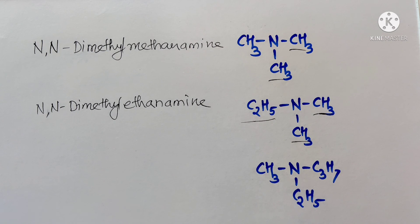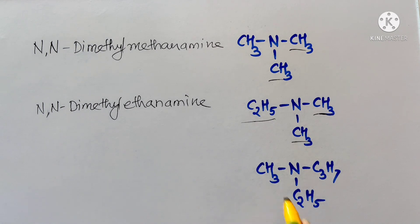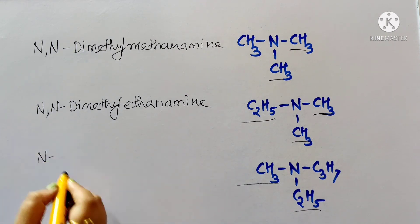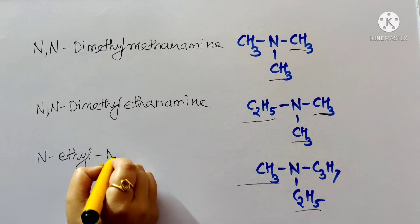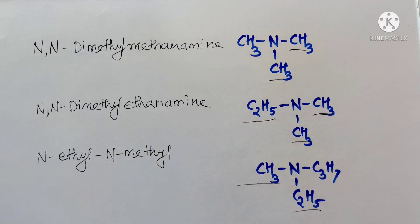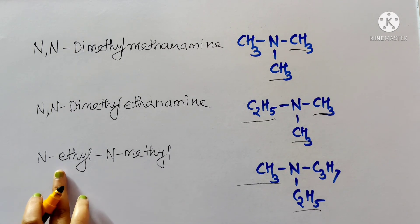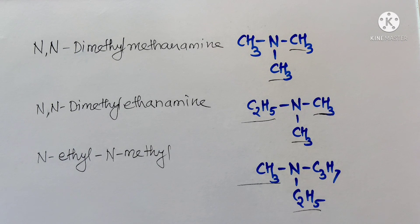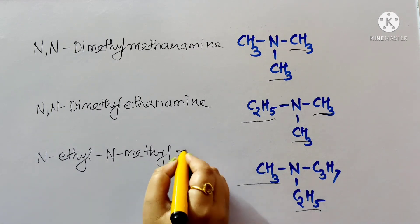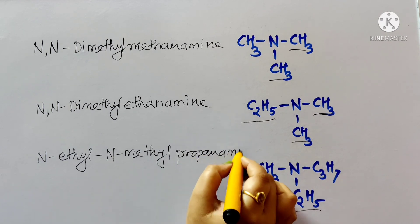For a tertiary amine with methyl, ethyl, and propyl groups attached to nitrogen, the common name is ethylmethylpropylamine. For the IUPAC name, ethyl and methyl are N-substituents (alphabetically ethyl is listed first), and the longest chain (three carbons, propane) is the parent — giving N-ethyl-N-methylpropanamine.